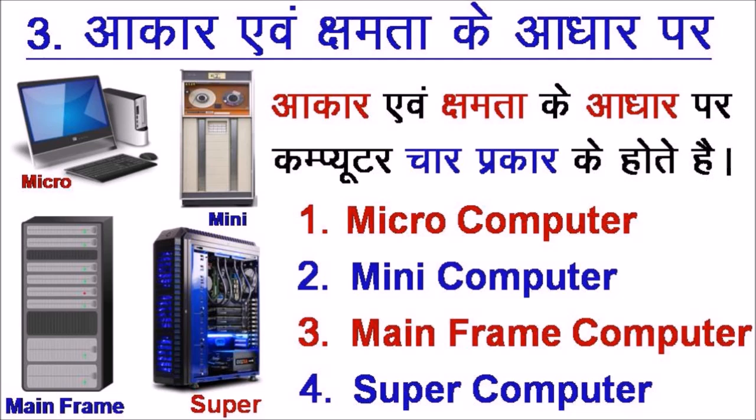तीसरा है आकार एवं क्षमता के आधार पर — Computer चार प्रकार के होते हैं। पहला है Micro Computer, दूसरा Mini Computer, तीसरा है Mainframe Computer, और चौथा है Super Computer।